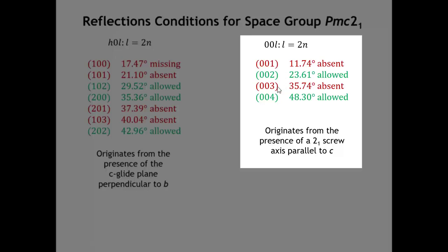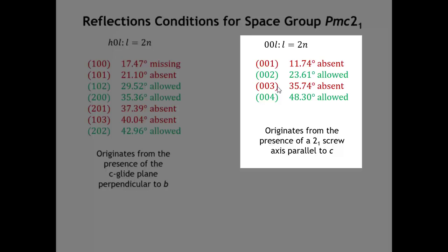This is what we mean when we talk about the reflection conditions. An analogous term often used is systematic absences. We could talk about the peaks that are missing — those would be the systematic absences — or the peaks that are observed, which would be the reflection conditions.